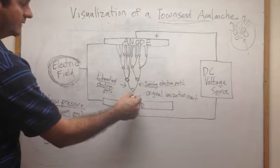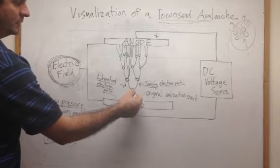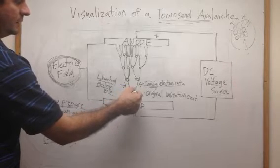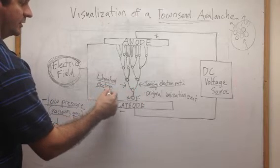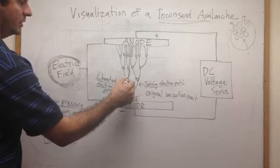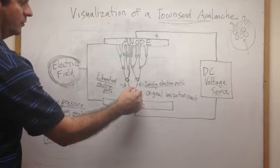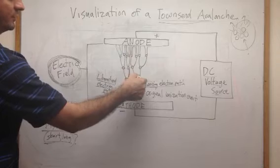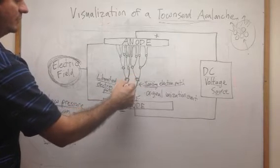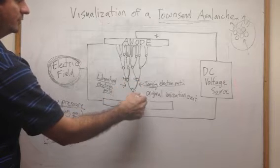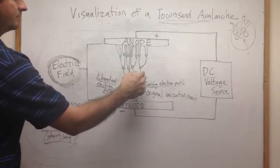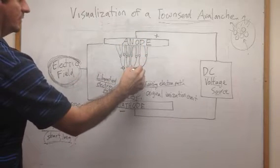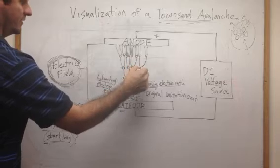that electron will slam into another particle, ionizing that, and then that original liberated electron will keep on going, and the ionized electron will add to that. Then they'll repeat the process - they'll slam into these, these become positive, move towards the cathode, and you have more electrons freed at the top, which move towards the anode, and the positive ion moving back towards the cathode.